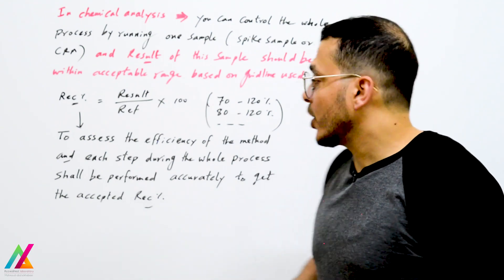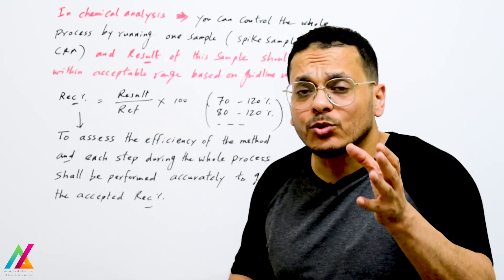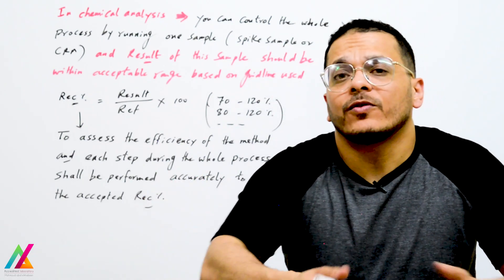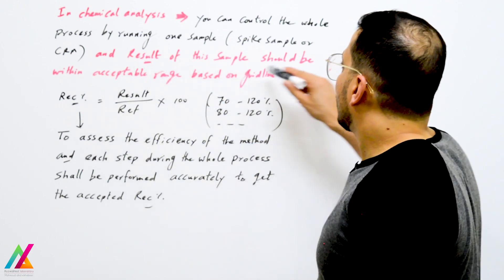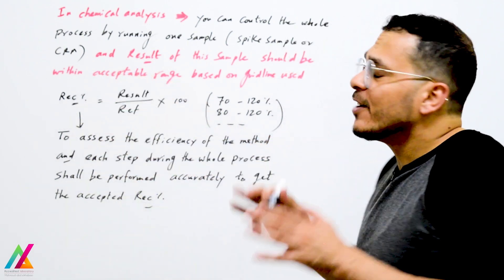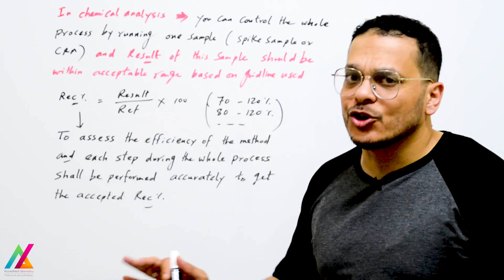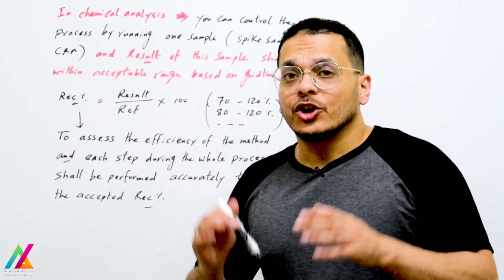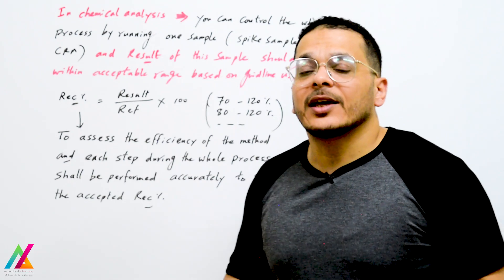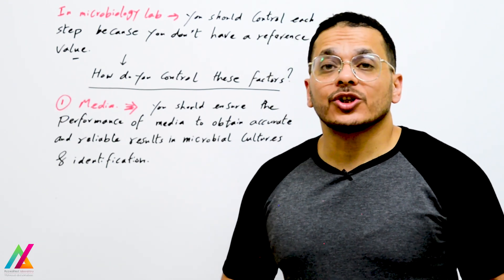You should have an acceptable range for recovery according to the guideline used — perhaps 70% to 120%, or 80% to 120%. Recovery should be within the acceptable range to ensure accuracy of results for all samples. In a microbiology lab, you must control each step during the whole measurement process and control all critical factors, because you don't have a reference value.